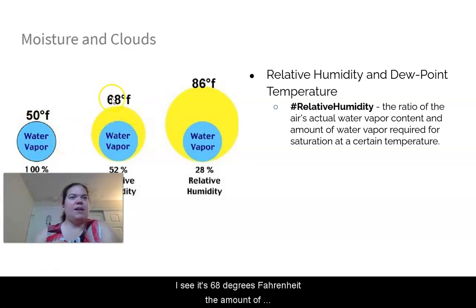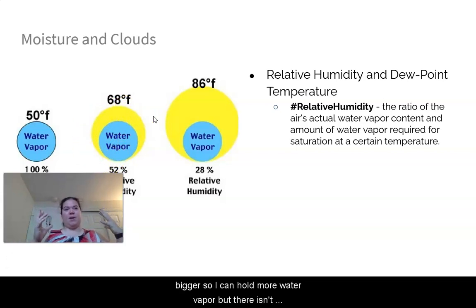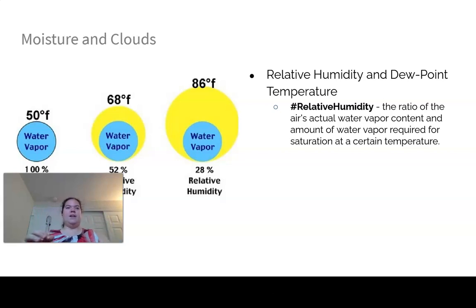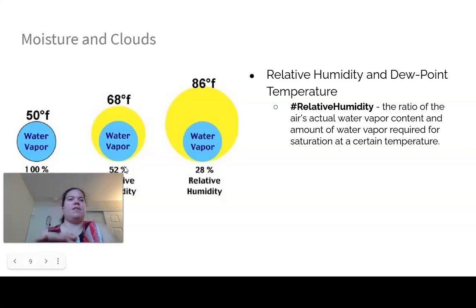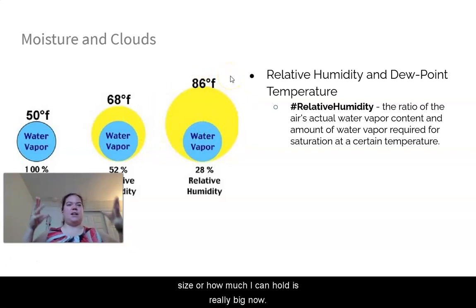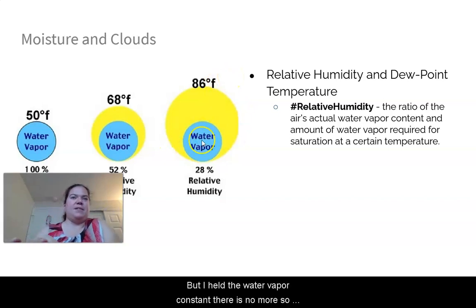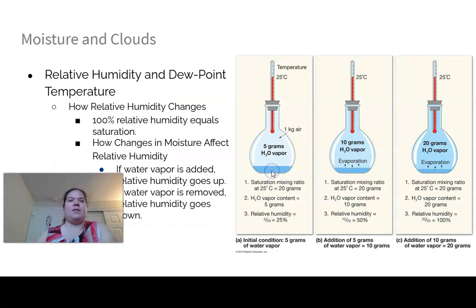By 11 a.m. at 68°F, the amount of water vapor hasn't changed but the temperature has risen, so the air can hold more — giving 0.52 × 100 = 52% relative humidity. By afternoon at 86°F, the bucket size is really large but water vapor is constant, so it's 0.28 × 100 = 28% relative humidity.